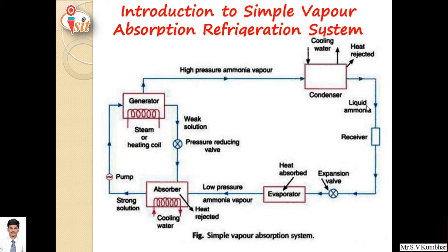This is the simple vapor absorption refrigeration system. Compressor is replaced by this generator and absorber unit. In the generator, we generally use a refrigerant plus absorbent solution. Most of the time we prefer aqua ammonia solution — ammonia is used as refrigerant and water is used as absorbent. The generator is heated with the help of heating oil, steam, or waste heat energy wherever available, due to which high pressure, high temperature vapors of ammonia are formed.